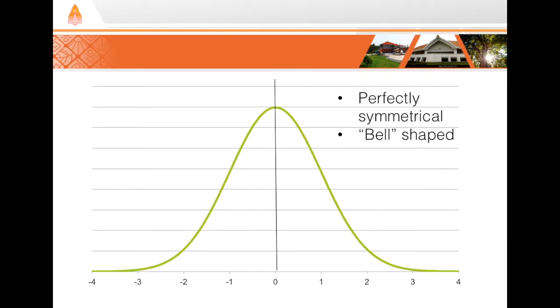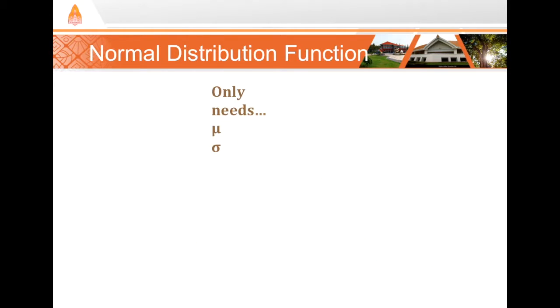Its simplicity lies in the fact that we only need two quantities to define a normal distribution: the mean and the standard deviation. We use the population means and standard deviations here because we're theoretically defining the distribution of the entire population.